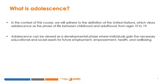Adolescence is a period when individuals gain and develop educational and social skills that will determine future employment, empowerment, health and well-being. Next, we will study three economic models that explain the decision-making made by adolescents, which consider, to some extent, the particular characteristics of this period of life.